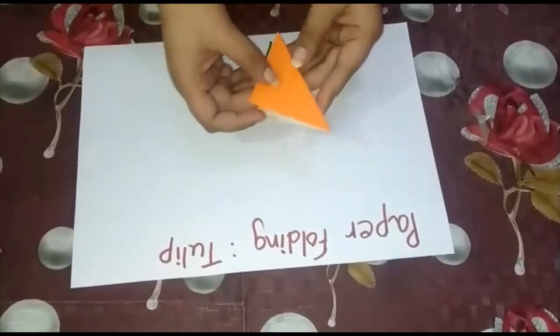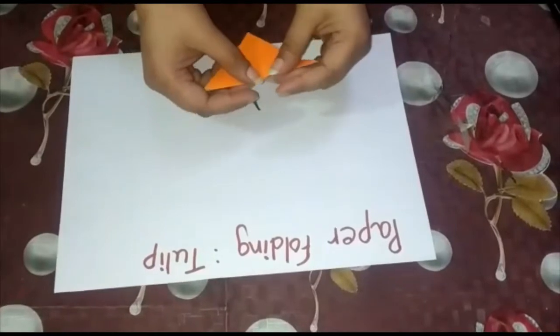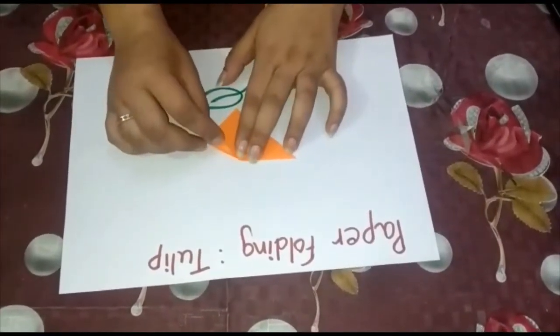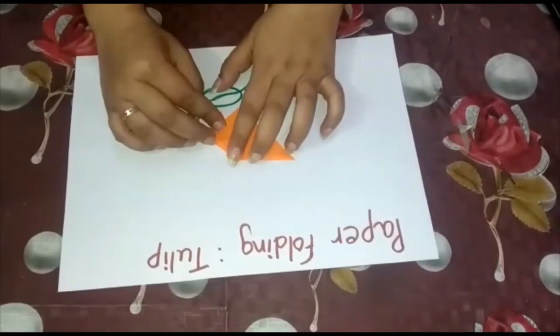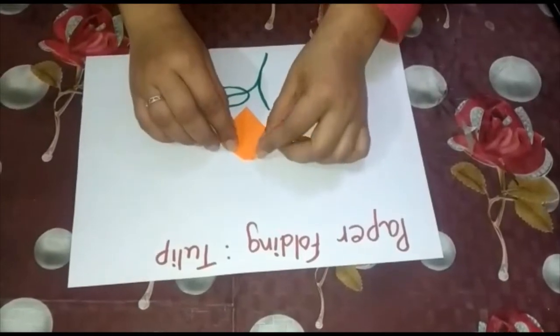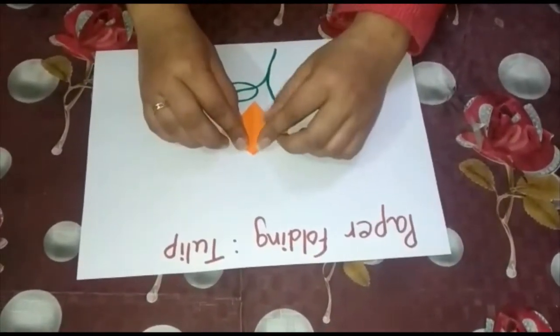Here is the crease which we have done earlier. Now put it like this, put the triangle like this, and fold it at an angle. Fold the other side also at the same angle.